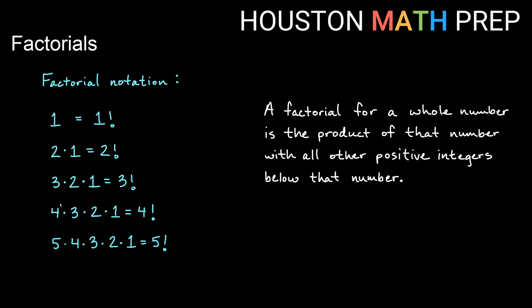Four factorial: you start at four and multiply by all the positive integers until you get down to one. Five factorial: you multiply five by all of the positive integers until you get down to one. So going back quickly — one factorial is just one, two factorial is two times one which gives us two, and three times two times one for three factorial gives us six.